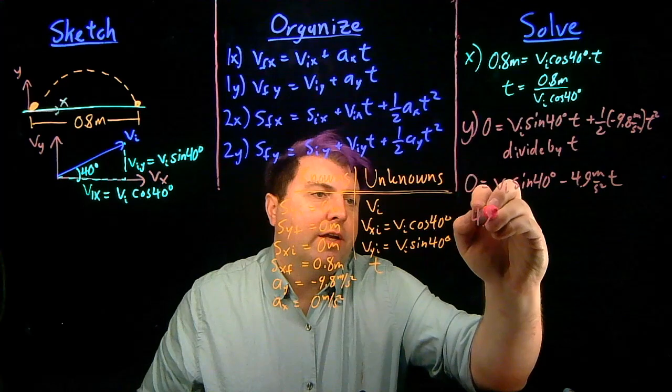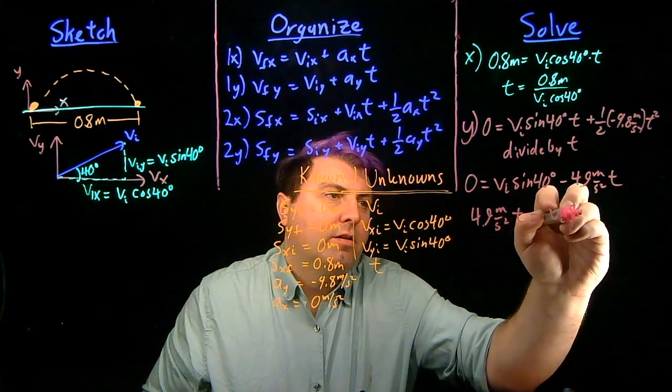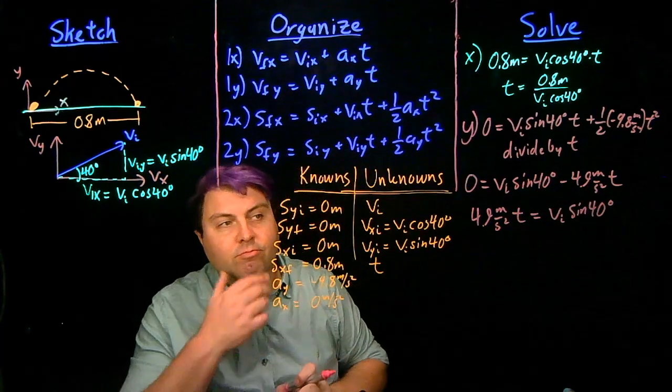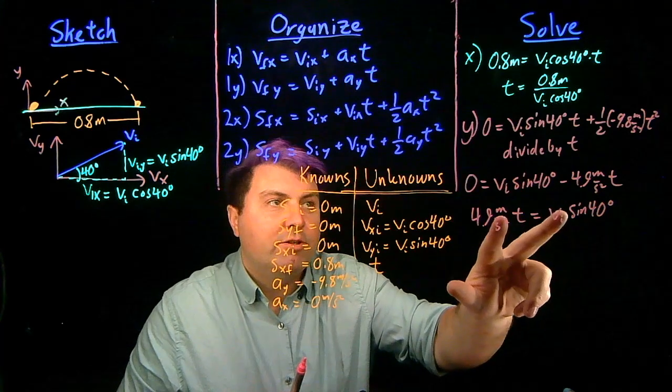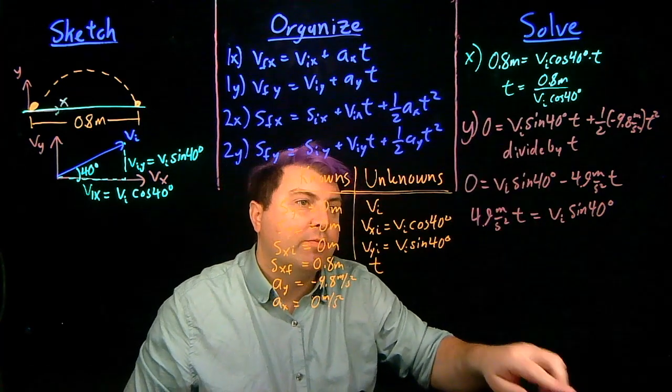Or we can say 4.9 meters per second squared t is equal to vi sine of 40 degrees. So, again, we still have two unknowns, but we actually know t from up here, so we can sub it in.